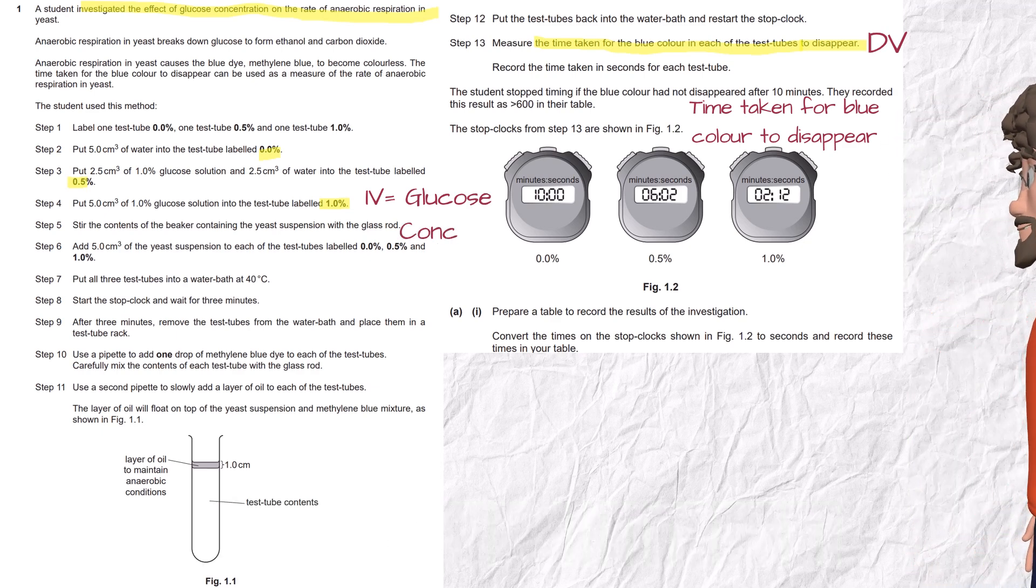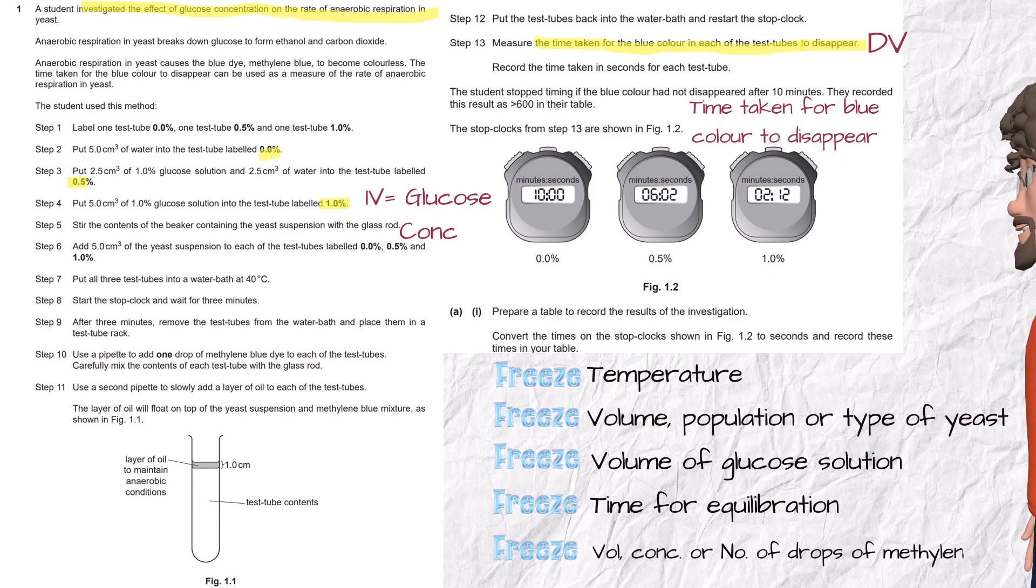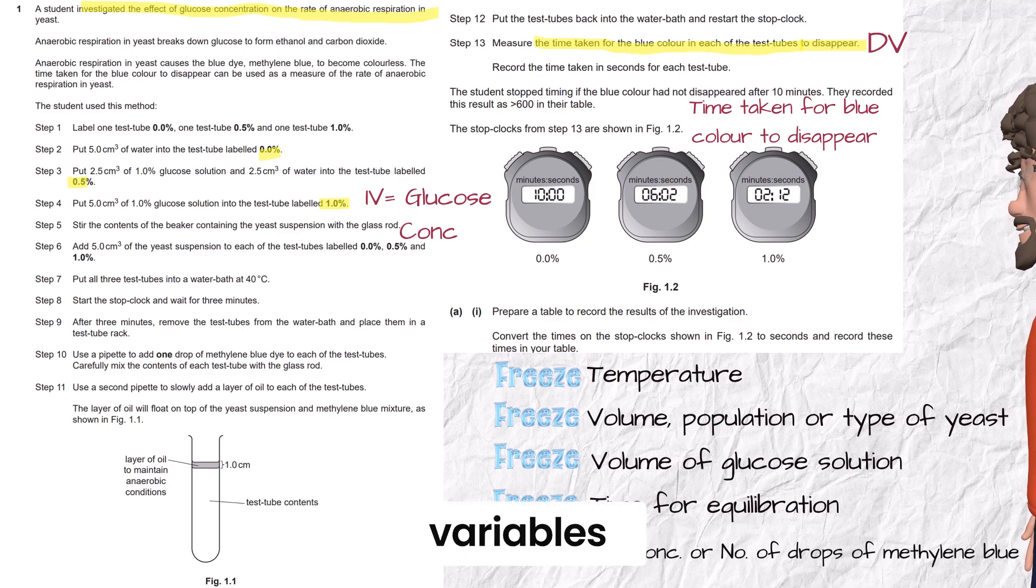What do I freeze? Anything else. Like temperature, volume, population or type of yeast, volume of glucose solution, time for equilibration, volume, concentration or number of drops of methylene blue. These are your control variables.